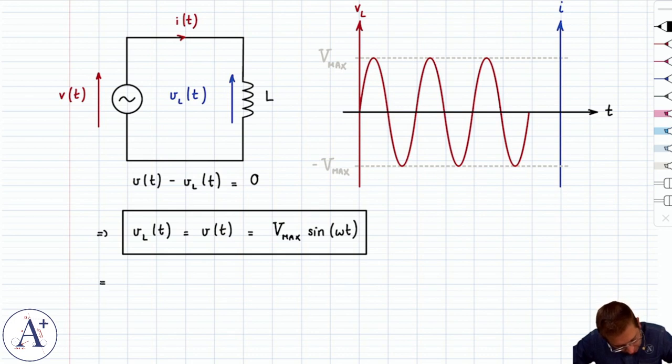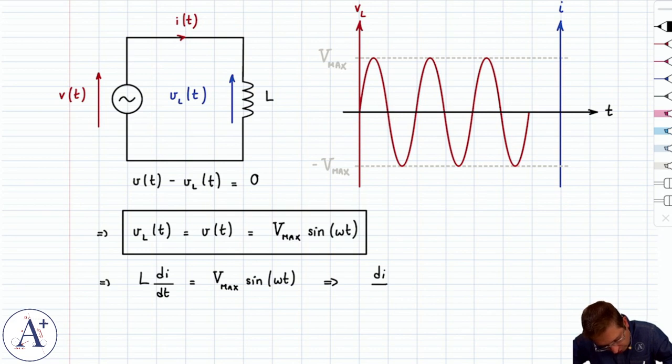Now recall that VL is L di/dt, and therefore L di/dt equals Vmax sin(ωt). And that means that we can get the expression for the current—we just have to work for it a bit.